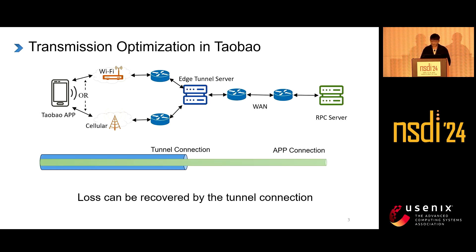In Taobao, we mainly use QUIC tunnel to optimize transmission, especially for RPC. Packet loss greatly impacts user experience, which is quite common on Wi-Fi and cellular networks. To reduce the time for packet loss recovery, we have deployed many tunnel servers at edge points. Users access RPC servers through tunnels, where tunnel connections can detect packet loss on Wi-Fi and cellular and perform faster packet loss recovery.